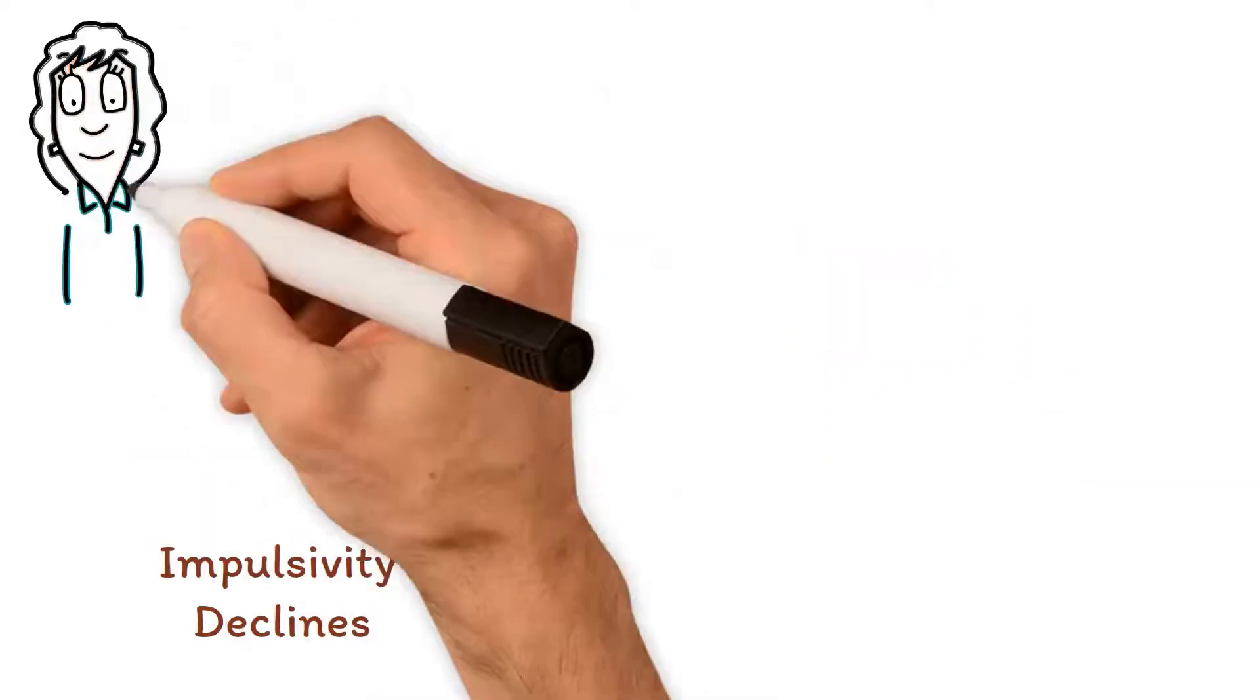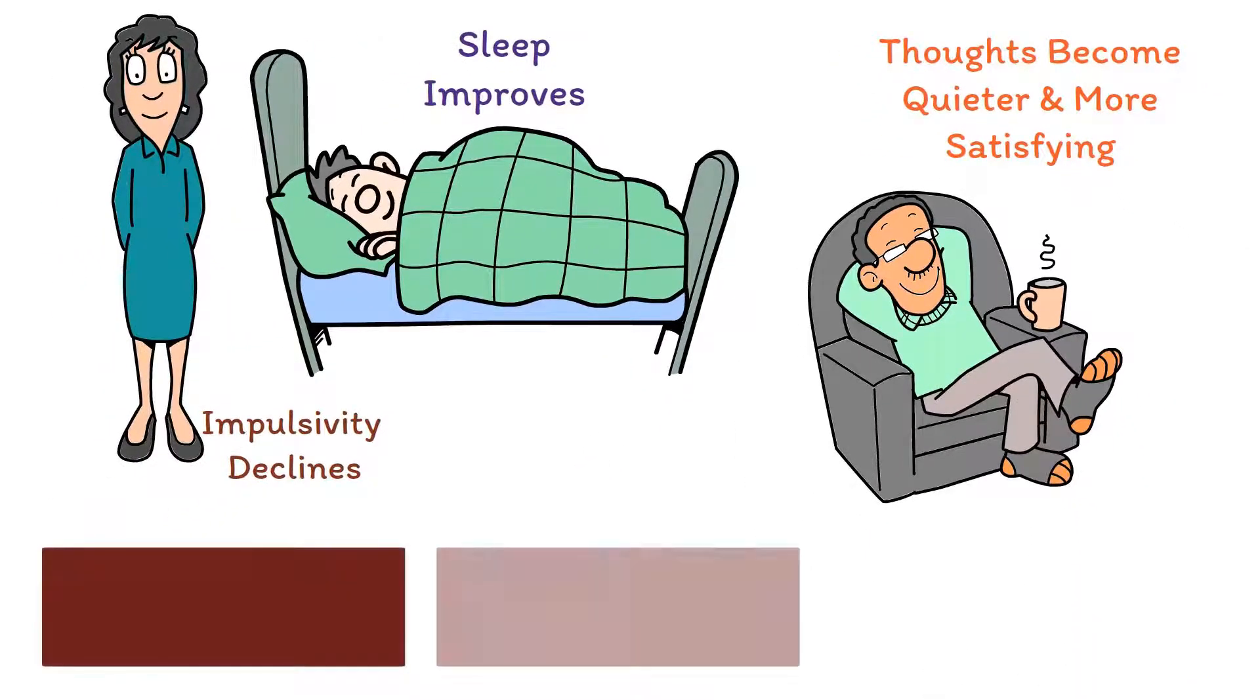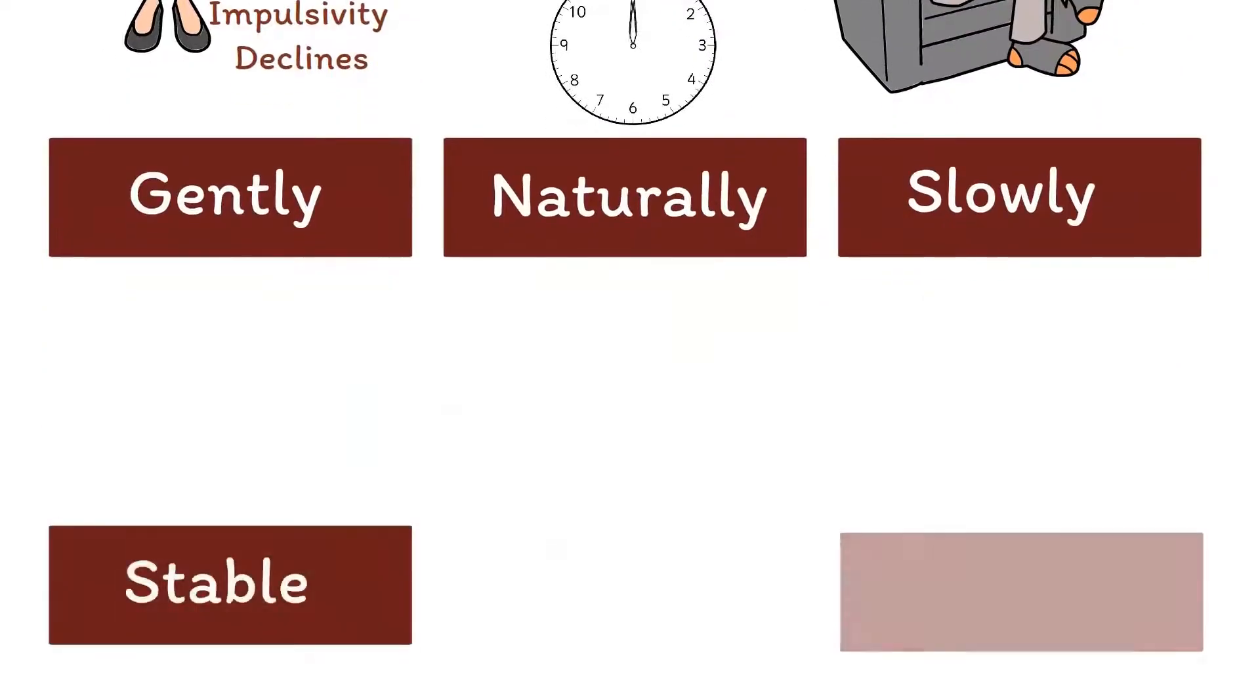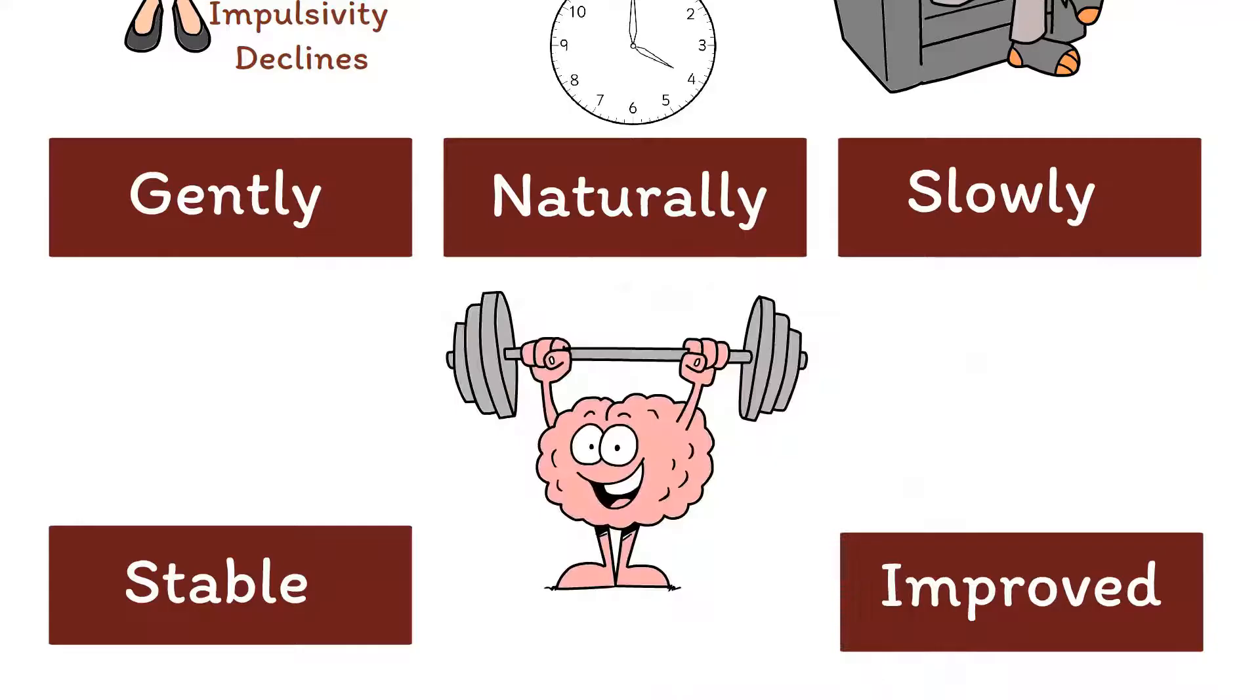Impulsivity declines, sleep improves, and thoughts become quieter and more satisfying. These changes occur gently, naturally, and slowly over time to create a more stable, improved state within the brain that's highly resistant to decline.